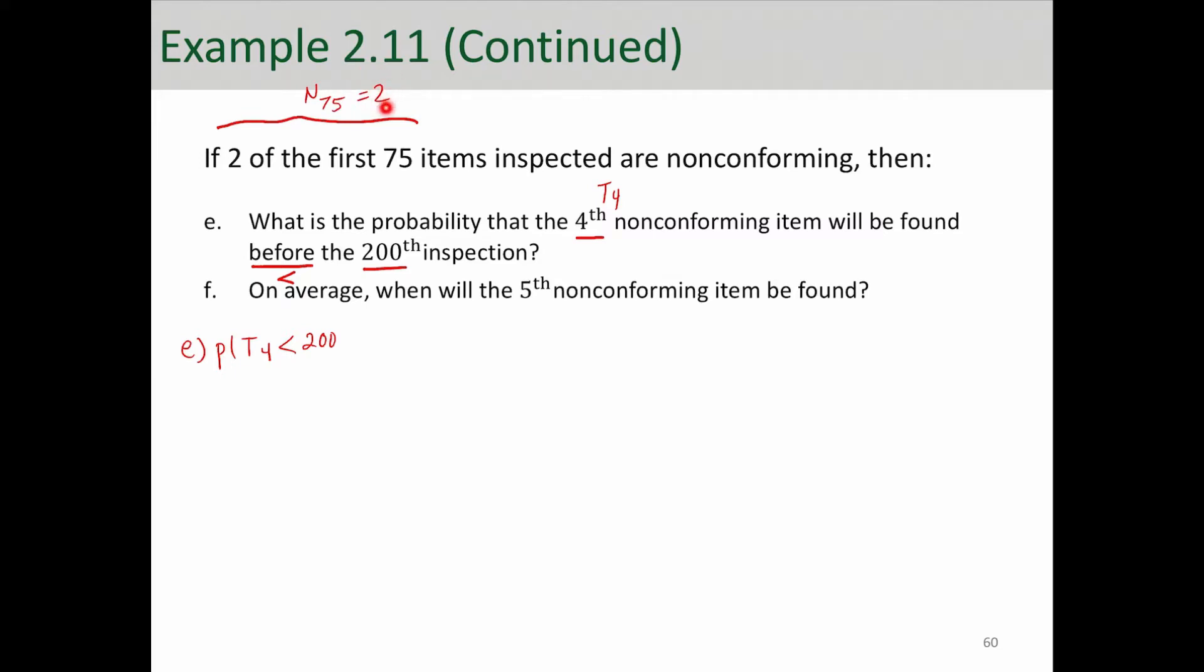Two non-conforming or successes in 75 trials. So that's a given condition here, and that condition changes our probability. So we have to incorporate this condition into this probability.